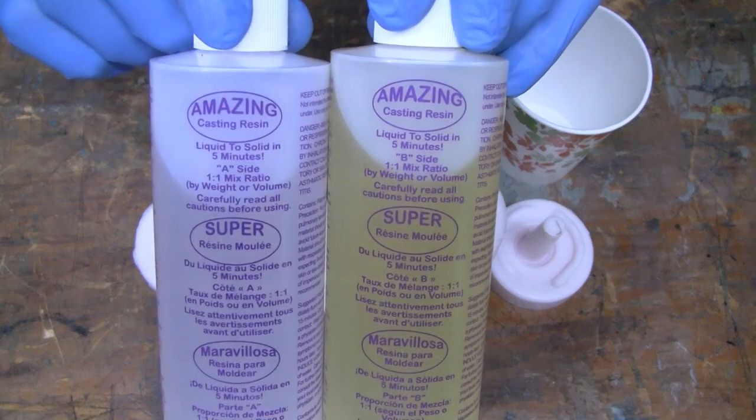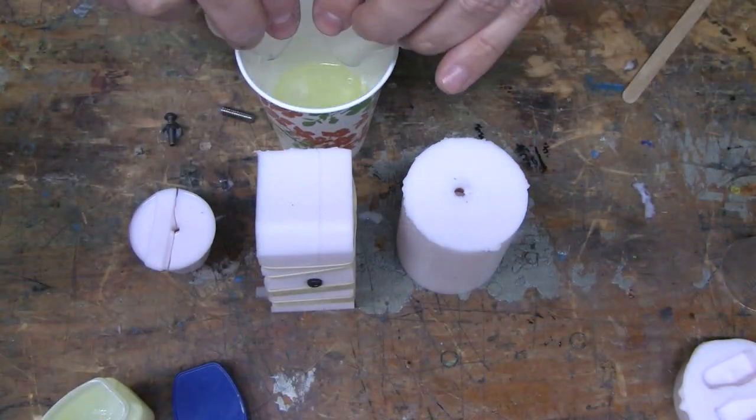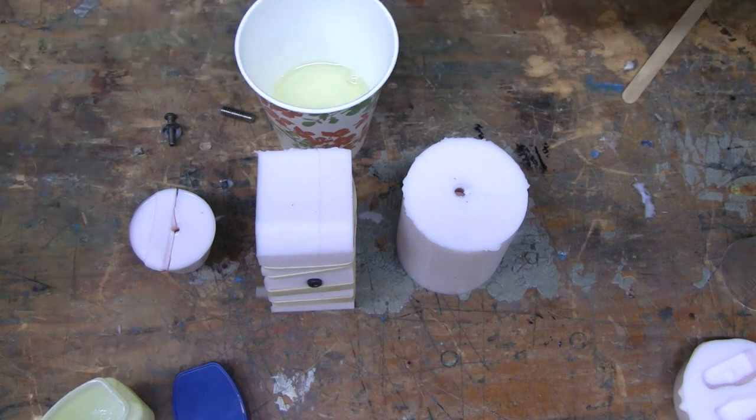We'll be using Amazing Casting Resin with a little dye to try to match the color. LumaLite dyes are really strong, so it doesn't take much.